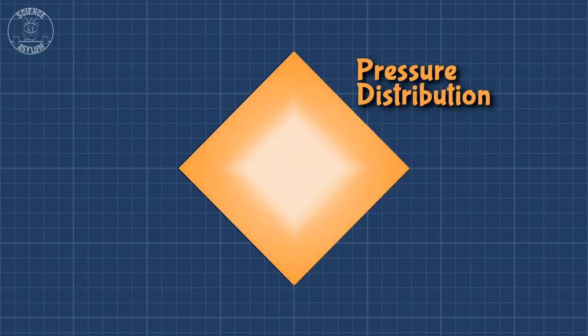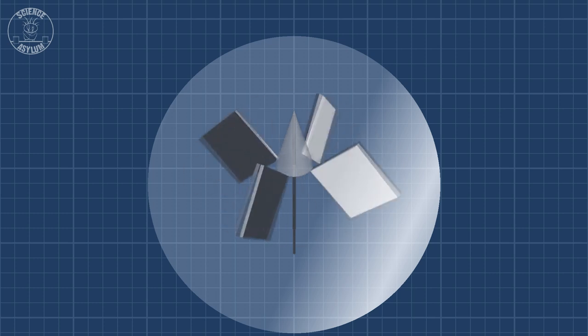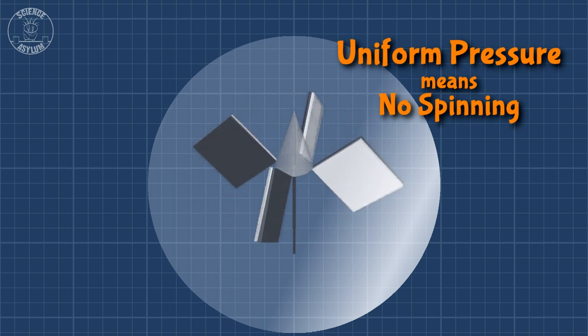However, the more molecules there are in the glass bulb, the smaller the mean free path. That does mean the pressure can distribute across the veins better, but too many and it will distribute throughout the whole radiometer better, resulting in effectively zero pressure difference on the veins.